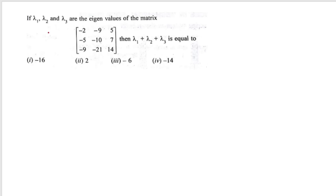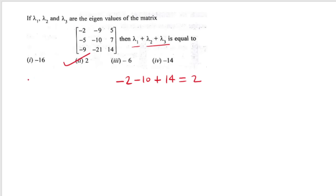If λ₁, λ₂ and λ₃ are the eigenvalues of the given matrix, what is λ₁+λ₂+λ₃? The sum equals the trace = −2+(−10)+14 = 2. The correct answer is 2.